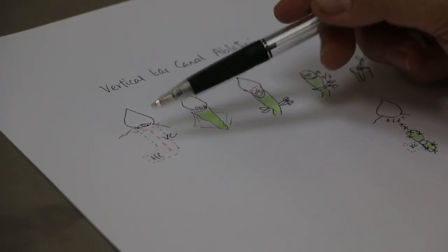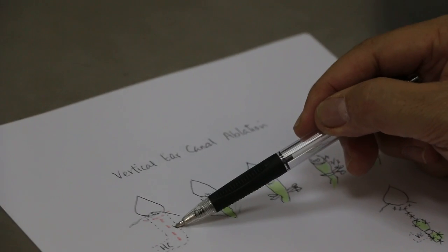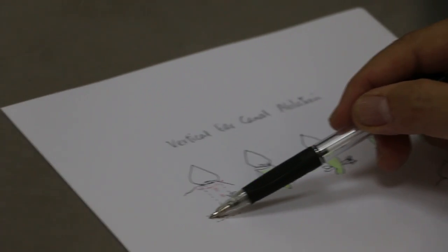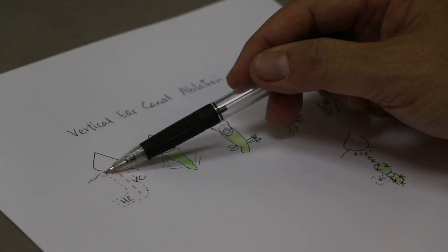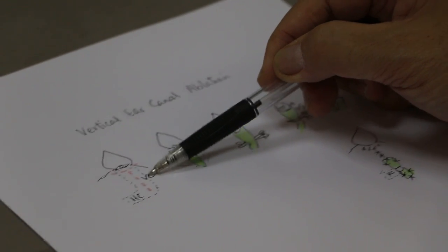Now the ear itself consists of one vertical canal and one horizontal canal in the dog. Unlike in human beings, in human beings they don't have a vertical canal.